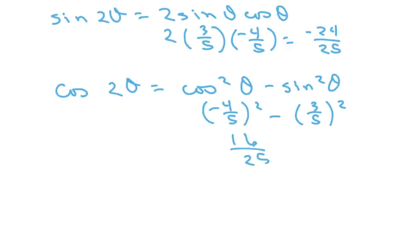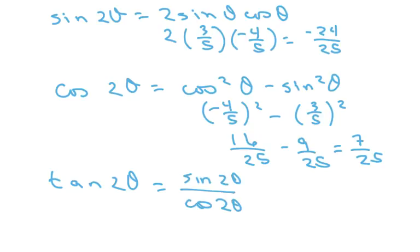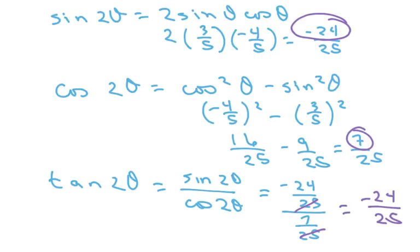Which equals 16 over 25 minus 9 over 25, which equals 7 over 25. And tan of 2 theta equals sine of 2 theta over cosine of 2 theta, which equals negative 24 over 25 divided by 7 over 25. These two cancel here, so my answer is... I messed up, which is negative 24 over 7.